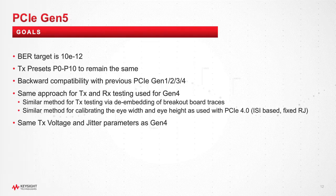Continuing with the goals, some things that didn't change are the target bit error rate — we're still operating with a bit error ratio of 10 to the minus 12. The transmitter presets are also the same. We defined the transmitter de-emphasis ratios in PCI Express 3.0, and we follow through with the same definitions for the presets P0 through P10 for PCI Express 5.0.